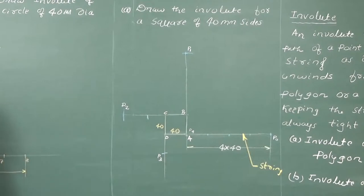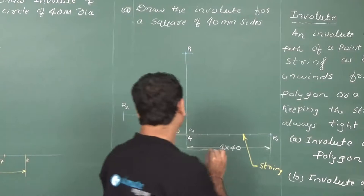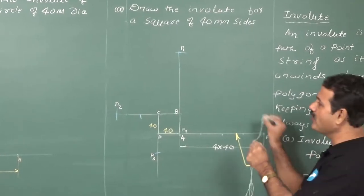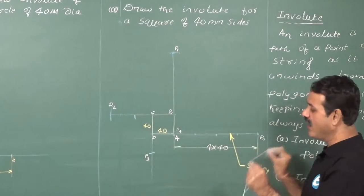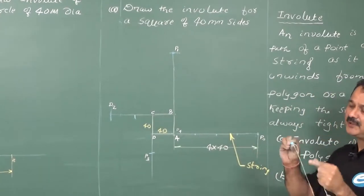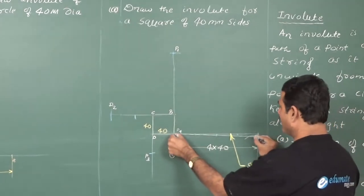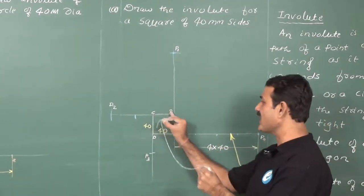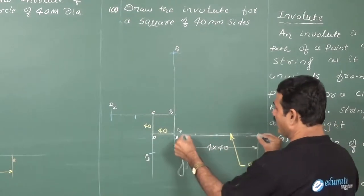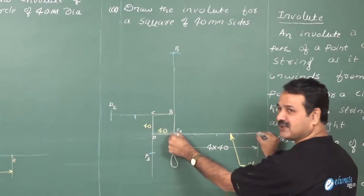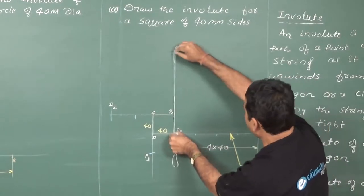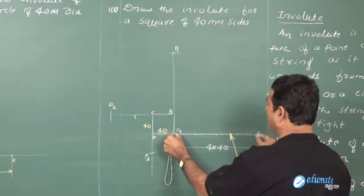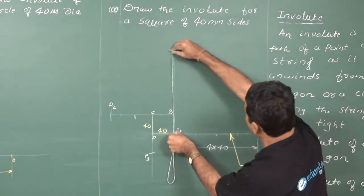For a polygon, the involute comes in terms of arcs. I am tracing the end of a string as it is wound around the square, always keeping the string tight. To start, keep one end of the compass at a corner, take the full length 4 × 40 = 160, and draw an arc. This gives the first part of the involute path.